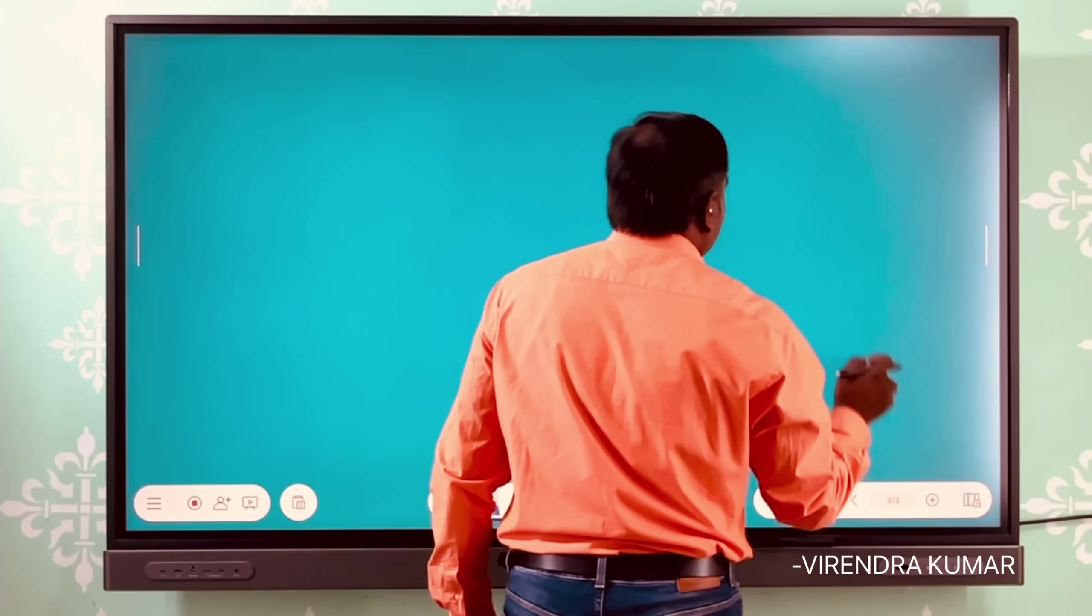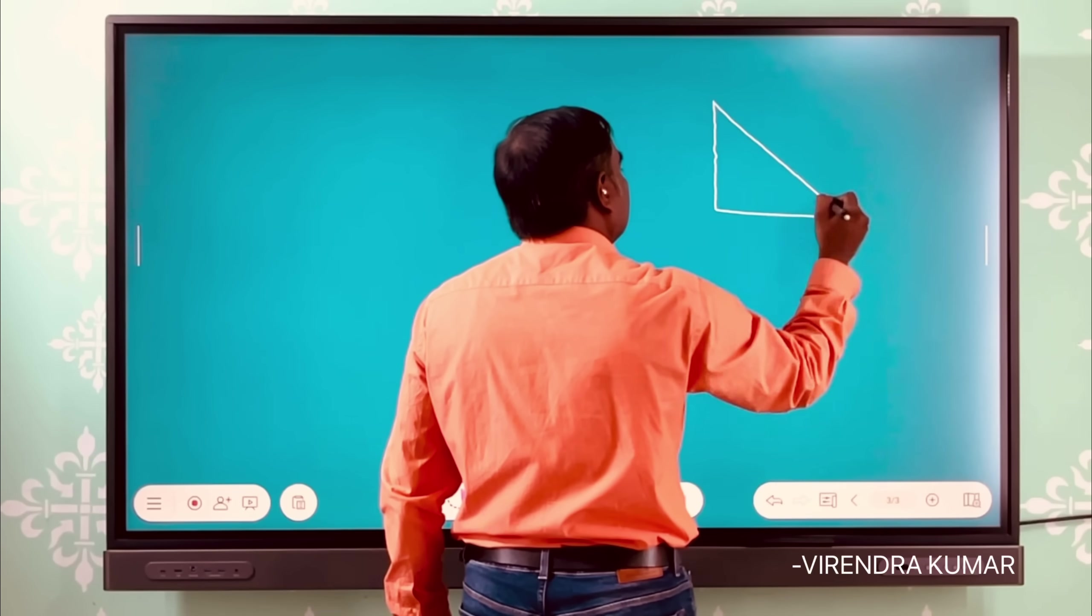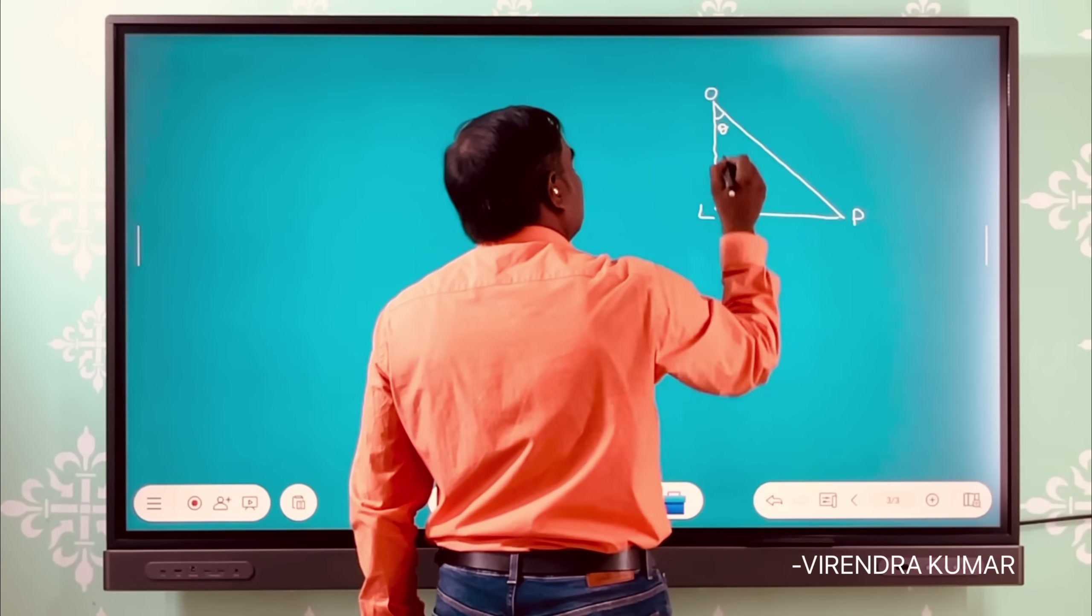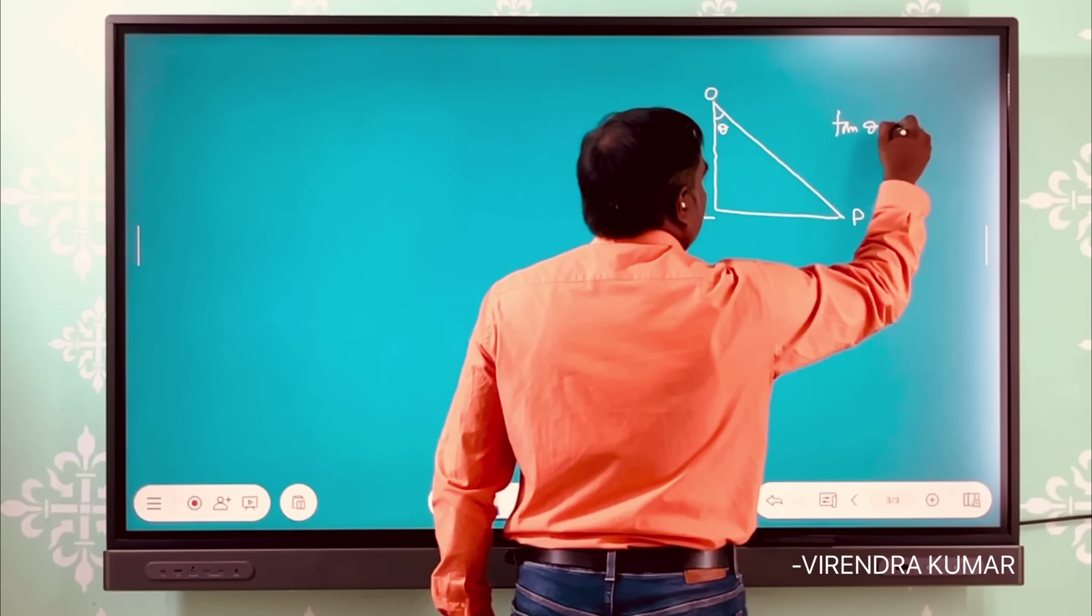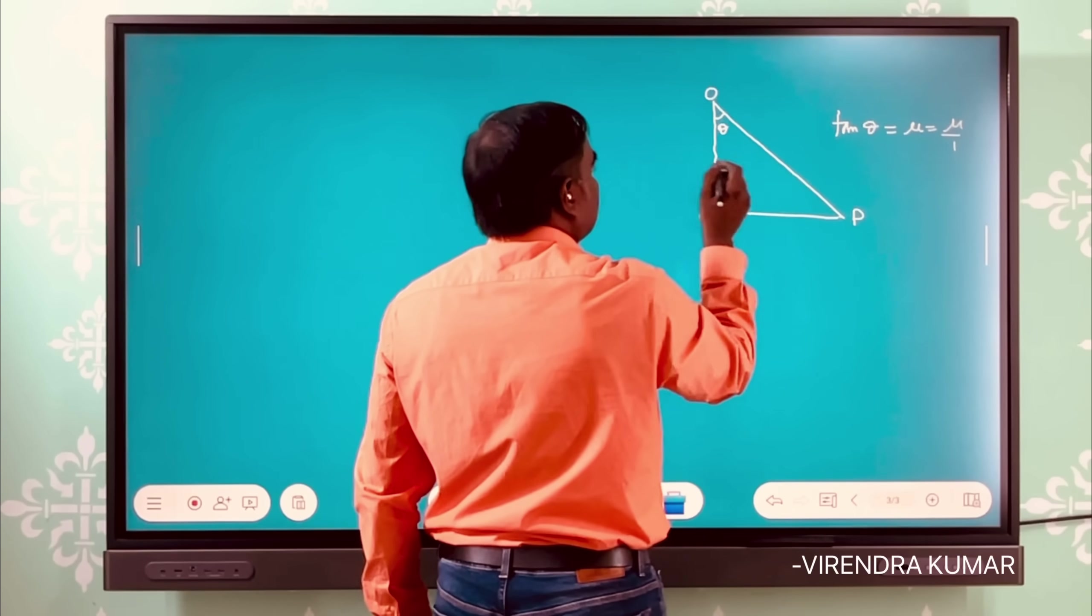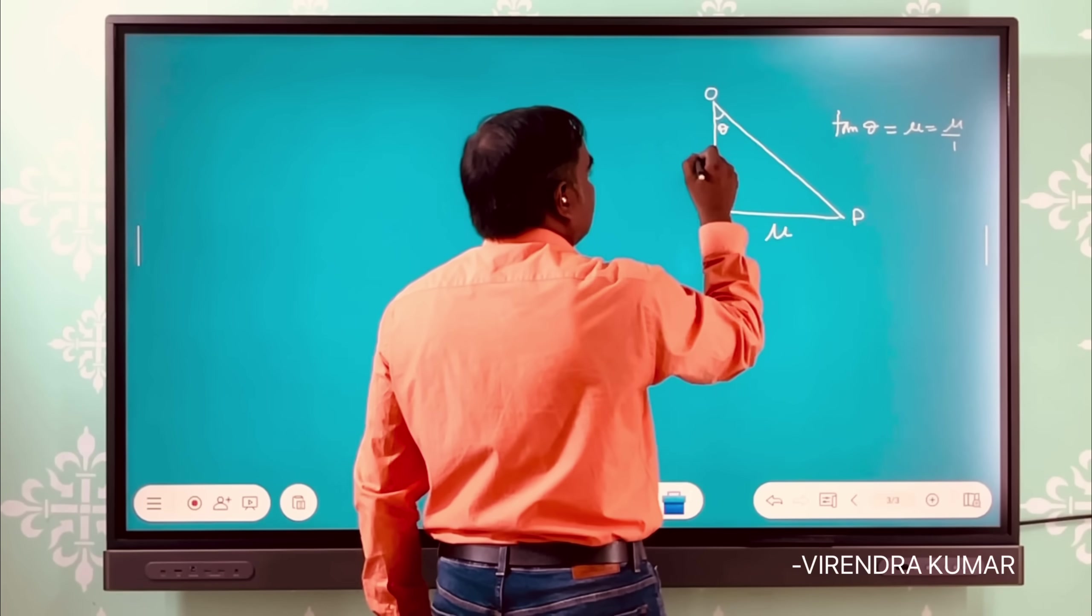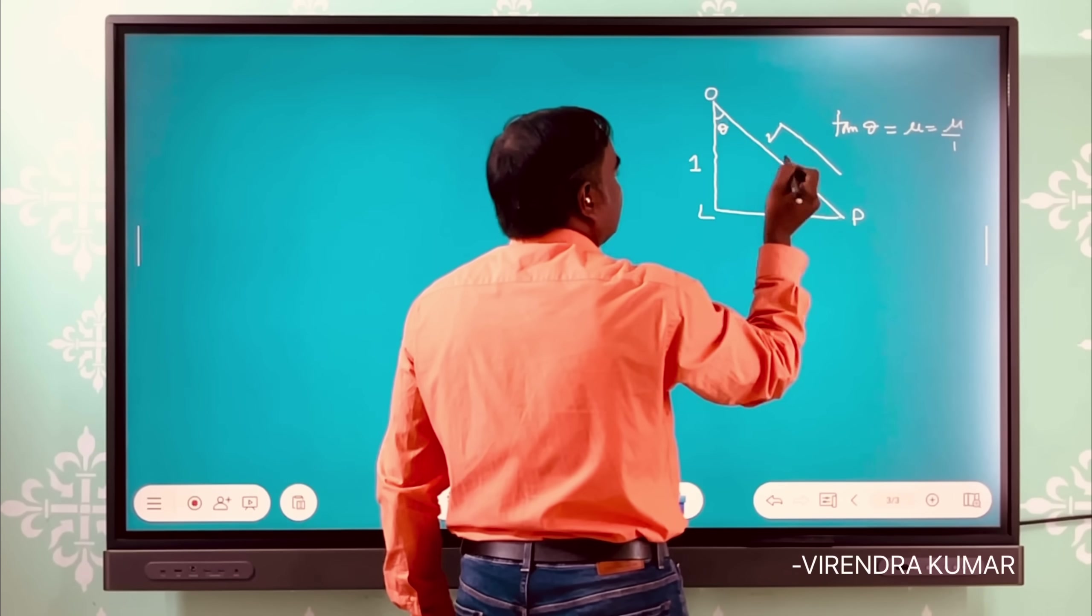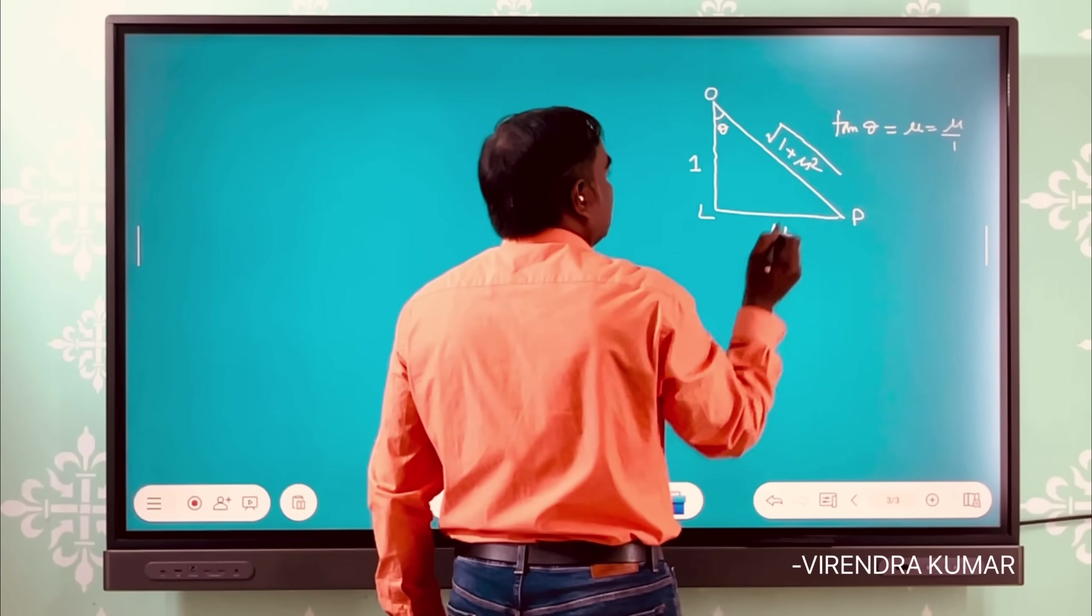So triangle OLP - suppose we consider this triangle, this is the point P, this is L, and this is O. So this is θ, so tan θ is equal to μ. That is μ upon 1, so this becomes - this is the normal μ and this is the base 1. So hypotenuse of this right angle triangle will be √(1 + μ²).